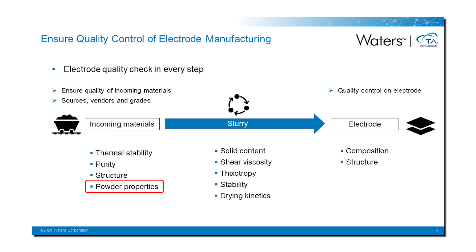Ensuring quality in the slurry through the entire process is key to desired electrode performance. For incoming materials, important properties include thermal stability, purity, structure, and powder properties. When the slurry is made, important properties include solids content, viscosity, thixotropy, stability, and drying kinetics. After drying the final electrode, important characterizations involve proper composition and structure.